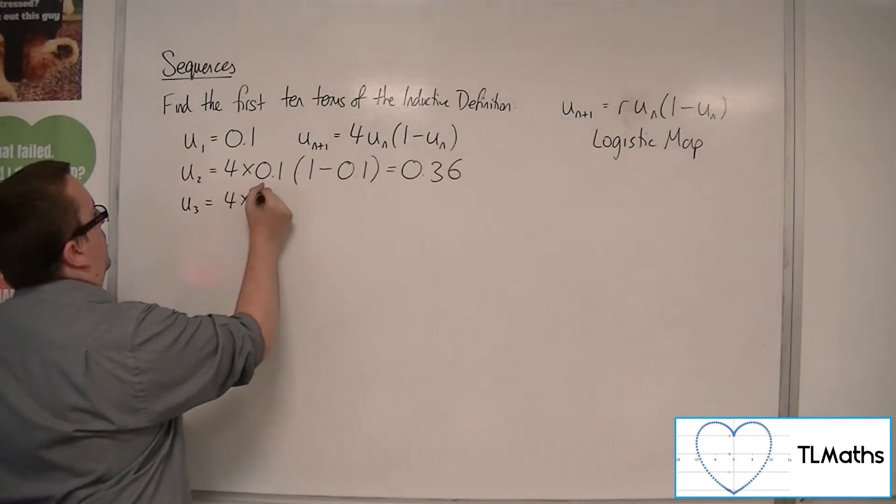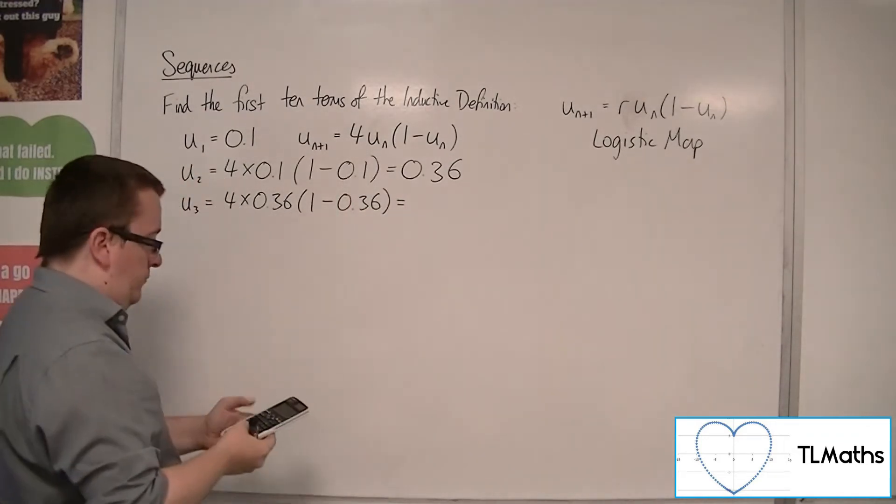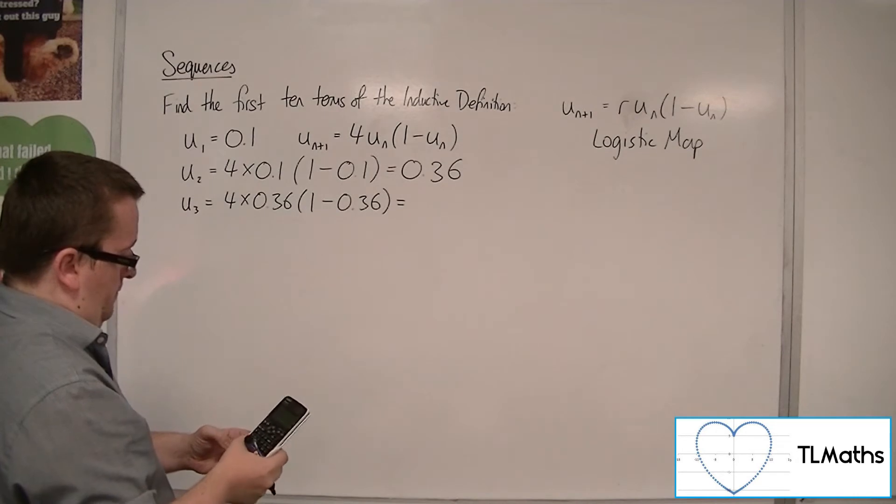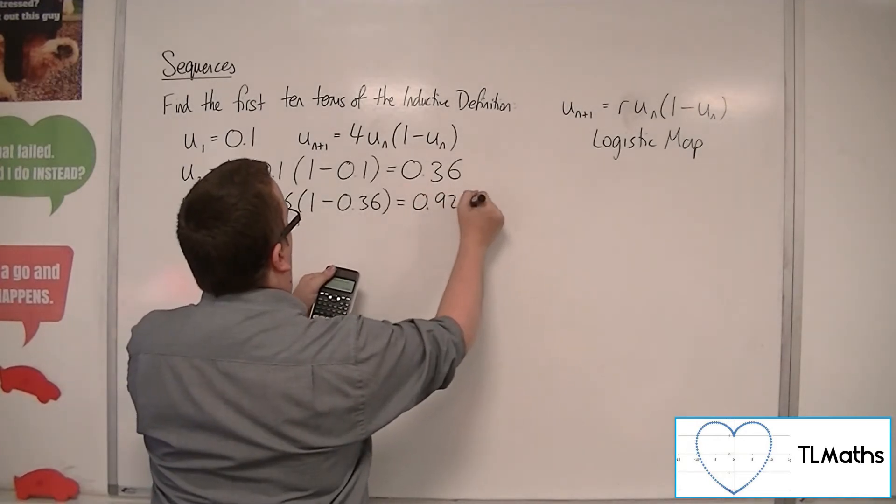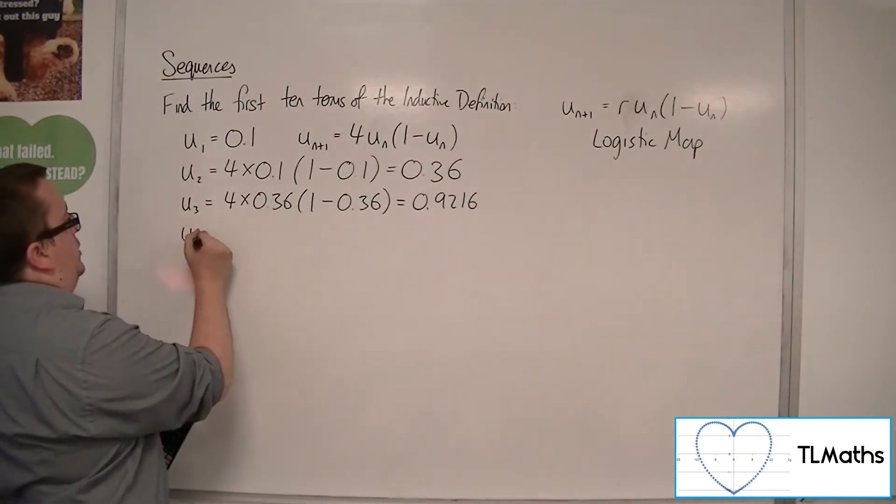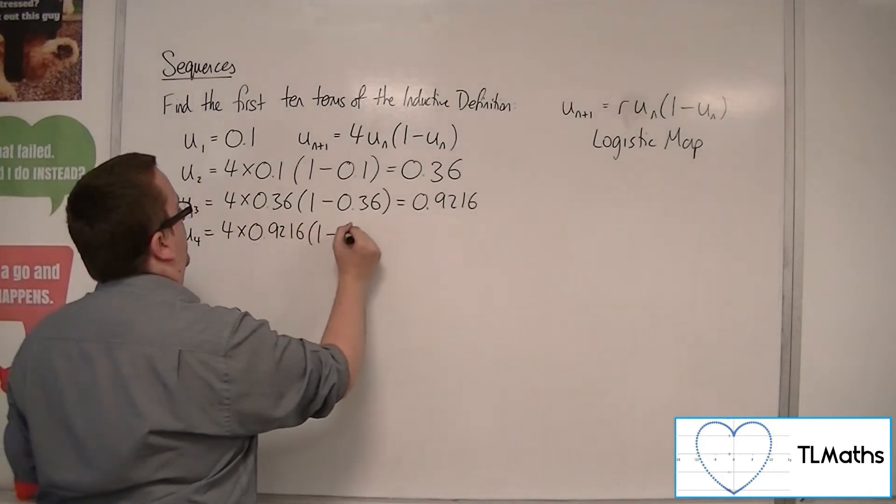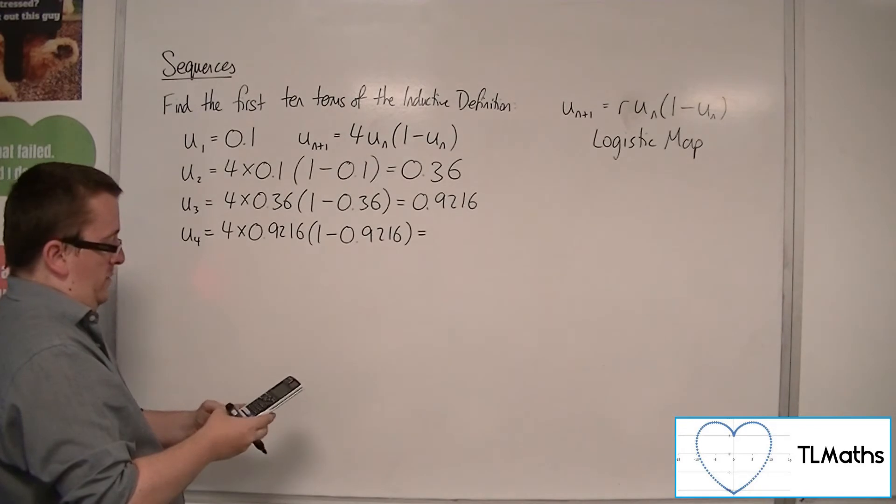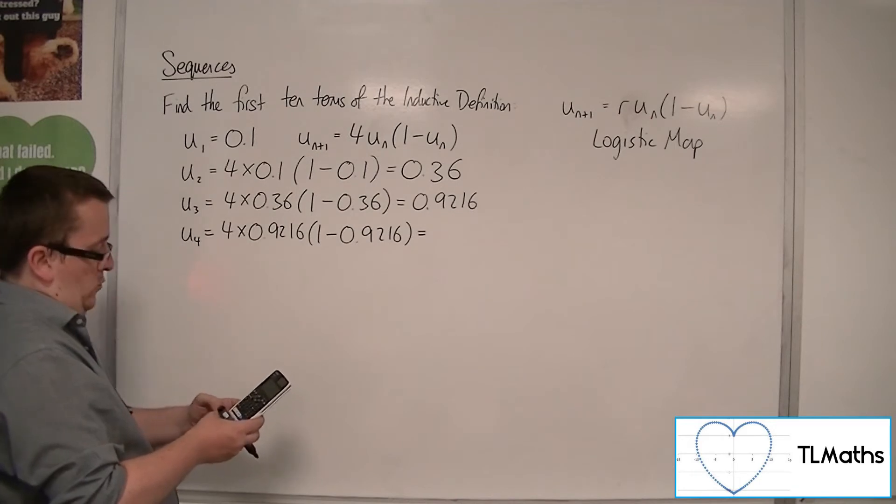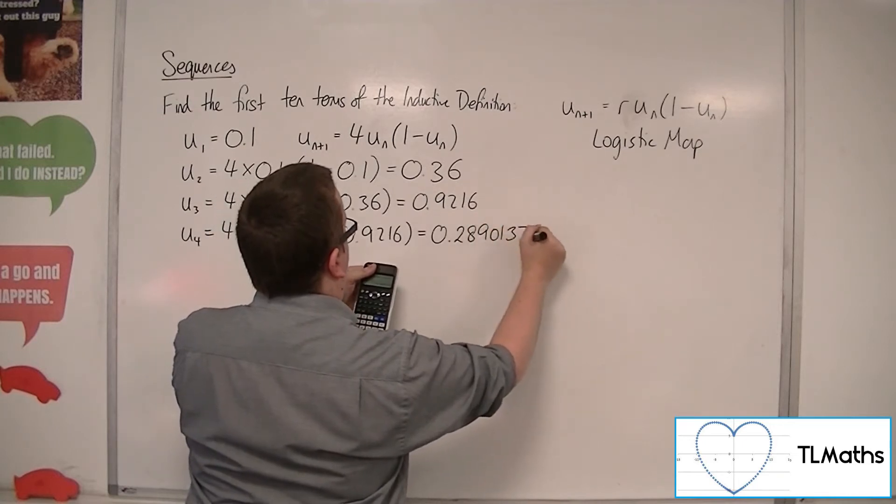U3 will be 4 lots of 0.36 times 1 take away 0.36, which is 0.9216. So 4 times 0.9216, times by 1 minus 0.9216. And that gets me 0.28901376.